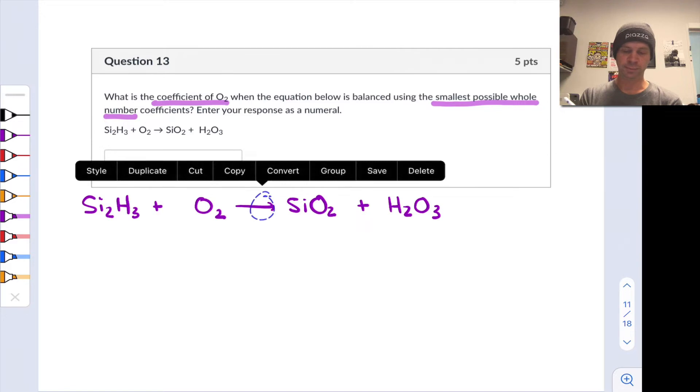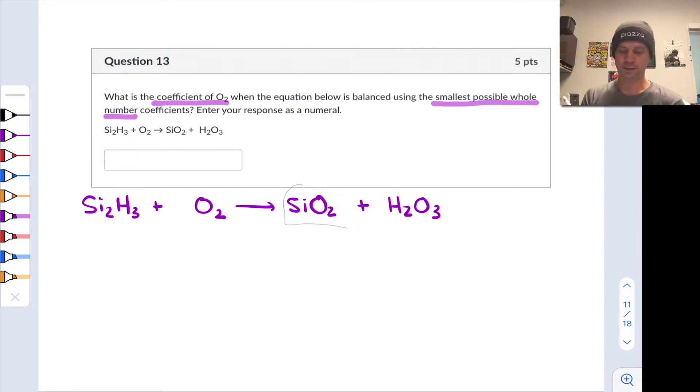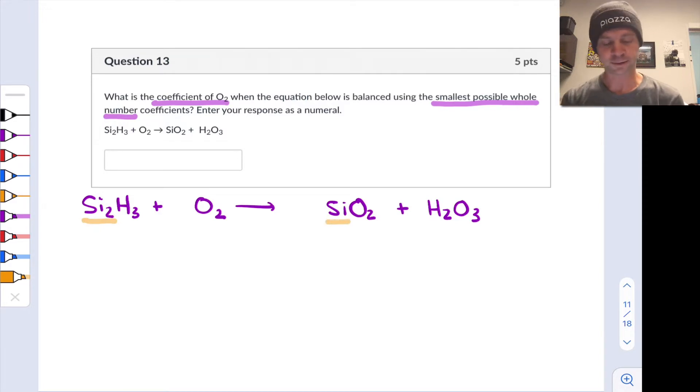So we have Si2H3 reacting with O2 to form SiO2 and H2O3. Some interesting formulas in there, but it is what it is. And let's space things out a little bit so that we have room to add coefficients as we balance this equation. Alright, and how to begin? Well, the first thing I would look for here is an element that appears only in one reactant and only in one product. And the first thing that jumps out to me anyway is silicon, which appears in Si2H3 on the reactant side and SiO2 on the product side. The fact that silicon only appears in these two compounds and that it's got a coefficient of 2 or a subscript of 2 on the reactant side and a subscript of 1 implied on the product side tells me that the ratio of Si2H3 to SiO2 has to be 1 to 2, right? I need a 2 over here to account for the 2 silicon atoms on the left-hand side of the chemical equation.